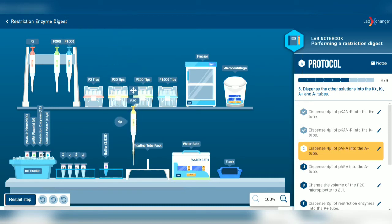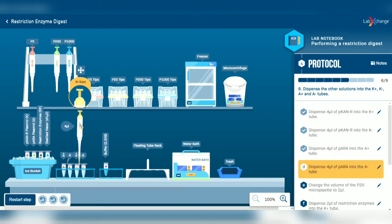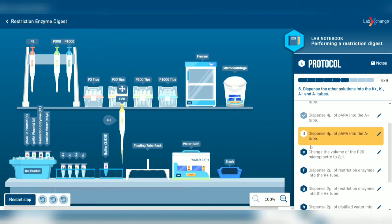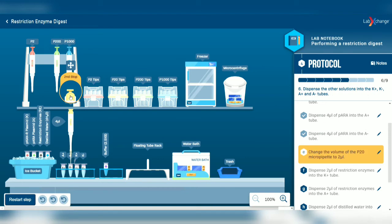Transfer plasmid KANR to the A-plus tube and eject the tip.